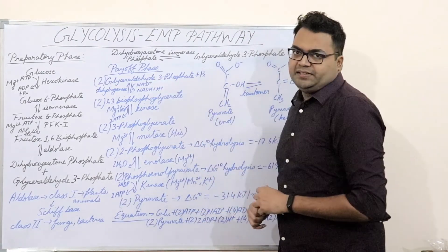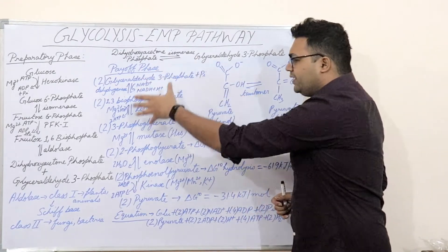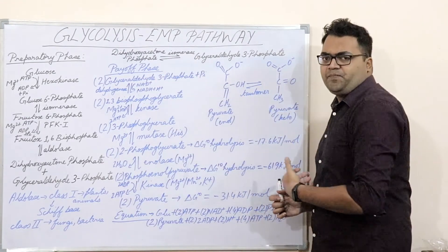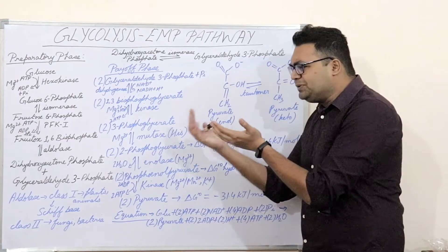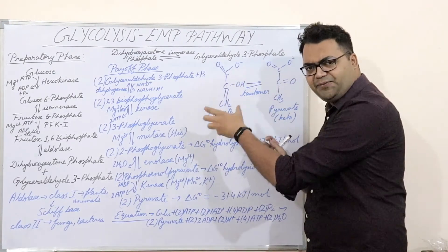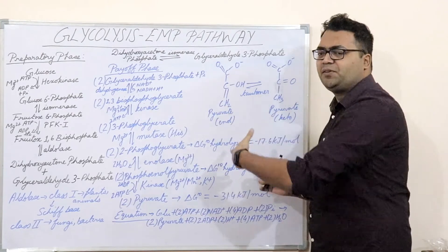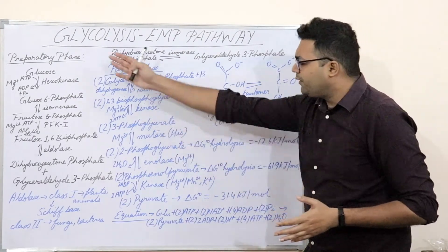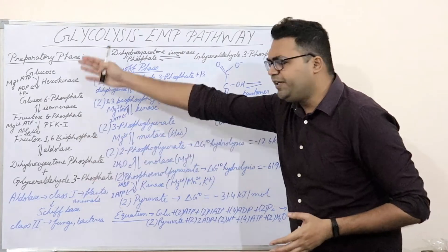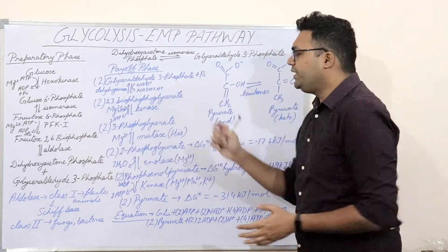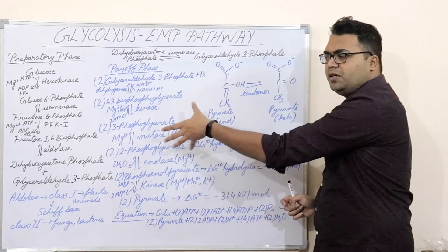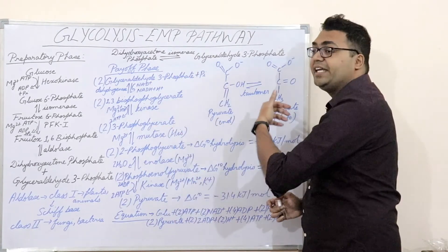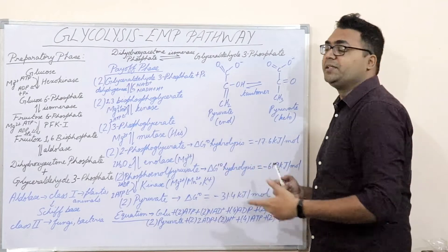Now we enter the payoff phase — the real game begins. Any pathway in biochemistry in our body does not happen just to use ATP; it must have a specific function or goal, which is to produce ATP or reducing equivalents. We have already used 2 ATPs in the preparatory phase, and now in the payoff phase we will be generating 4 ATPs — that is why it is called the payoff phase.